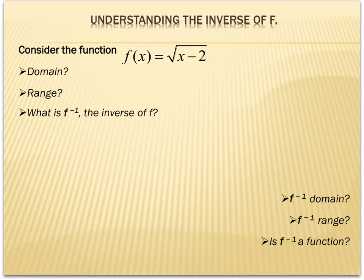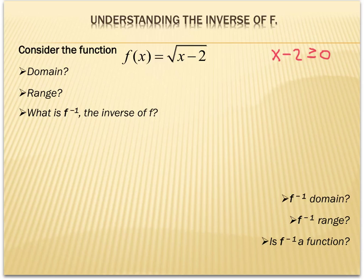Now we want to find the inverse of a function and also look at its domain and range. For domain, we're talking about the possible x values we're allowed to plug in. The only time we have trouble is with a radical or a fraction where the denominator can't be zero. For f(x) = √(x − 2), we have a radical, so we set what's underneath greater than or equal to zero and solve: x must be greater than or equal to 2. So the domain is all real x ≥ 2.